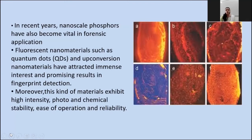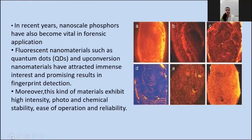Fluorescent nanomaterials such as quantum dots and upconversion nanomaterials have attracted immense interest and shown promising results in fingerprint detection. They have the ability to adhere themselves to the sweat components and sweat residues. Even if the fingerprint is not fresh — even if it is an aged fingerprint — we still have chances of developing it using nanophosphors and quantum dots. Moreover, these materials exhibit high intensity, photochemical stability, ease of operation, and reliability. They almost overcome all the limitations of previously used conventional fingerprint development methods, whether chemical or physical.